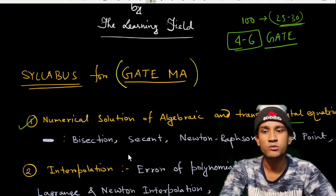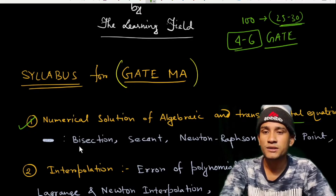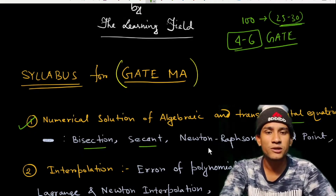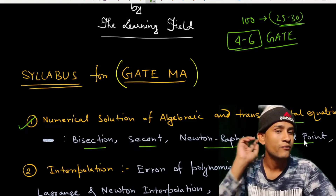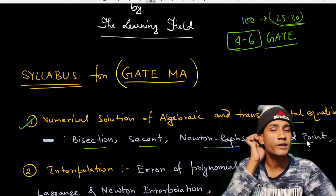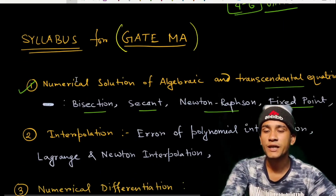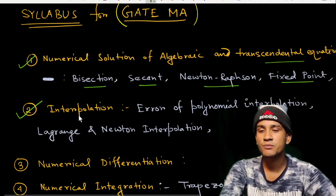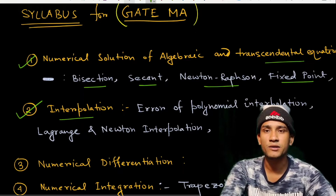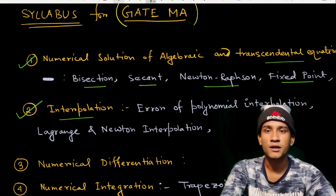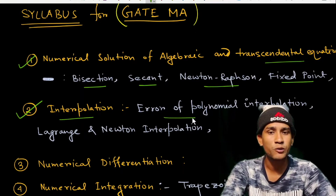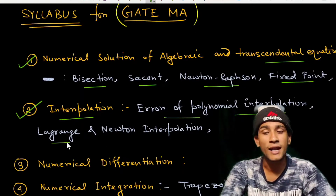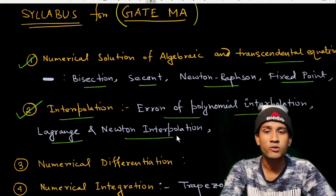In the first chapter, we have the bisection method, secant method, Newton-Raphson method, and fixed point iteration method. The second chapter is interpolation, which is also a very important chapter. The syllabus for interpolation includes theory of polynomial interpolation, Lagrange interpolation, and Newton interpolation.